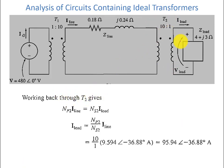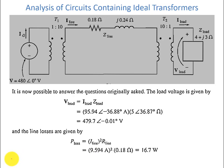Working back through the second transformer: NP2 · I_line = NS2 · I_load, so I_load = (NP2/NS2) × I_line = (10/1) × 9.594 ∠−36.88° = 95.94 ∠−36.88° A. The load voltage V_load = I_load · Z_load = 479.7 ∠−0.01° V. The transmission line losses are I_line² · R_line = 9.594² × 0.18 = 16.7 W. The losses have been reduced tremendously compared to the 1484 W without transformers.